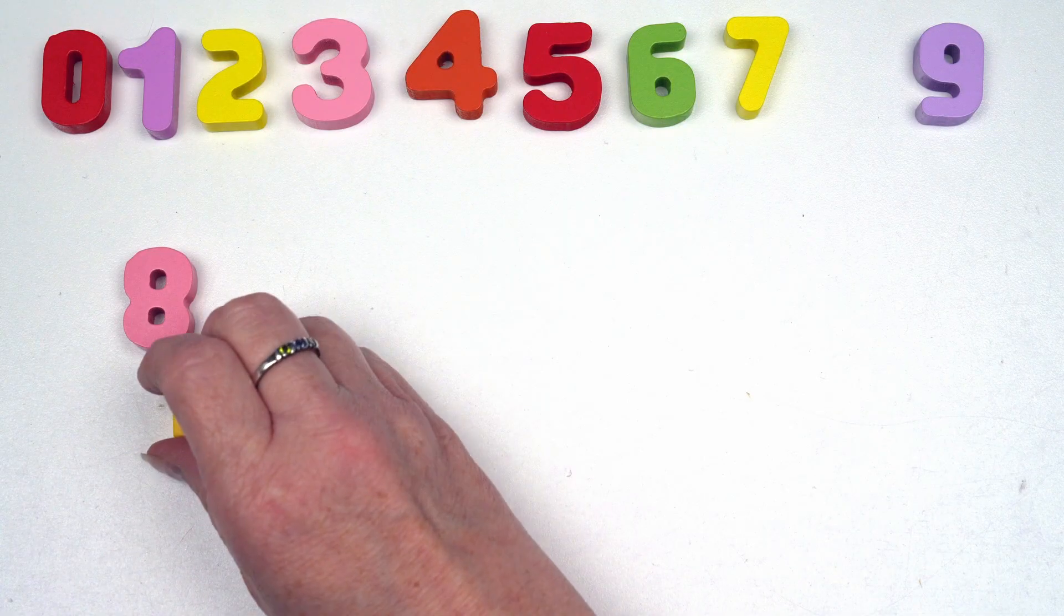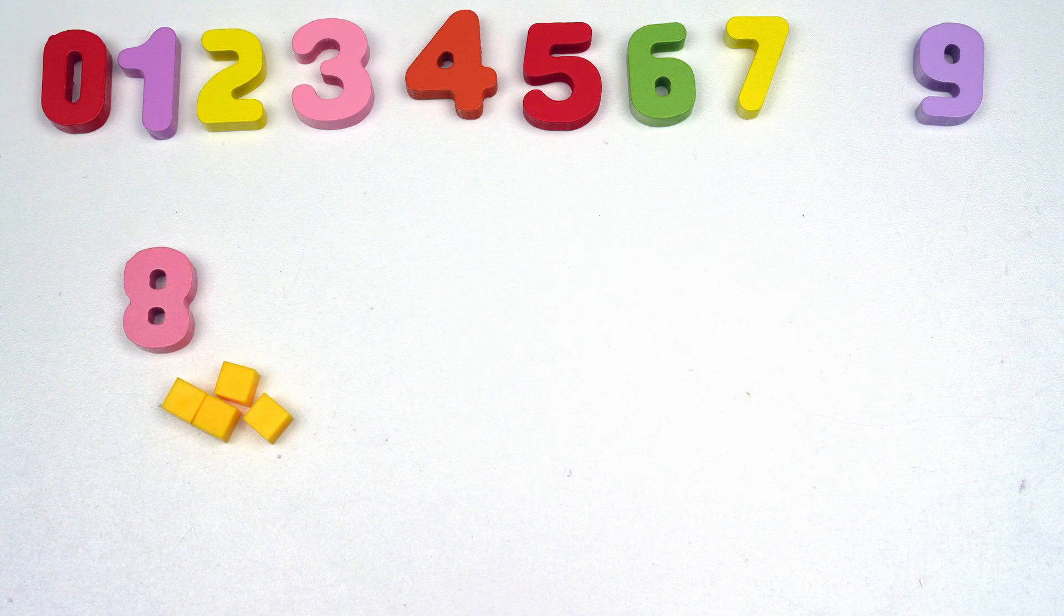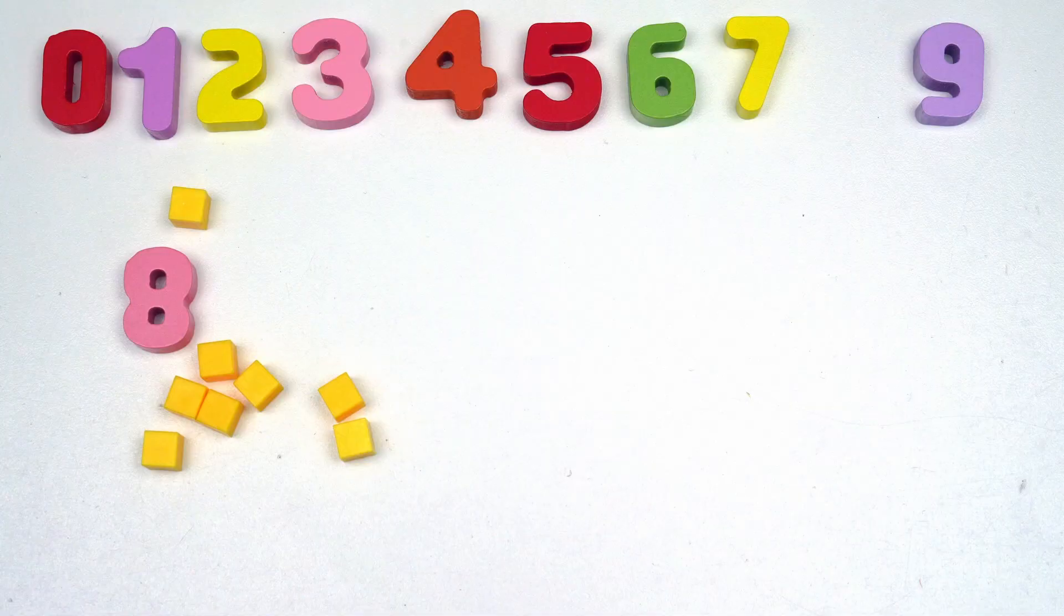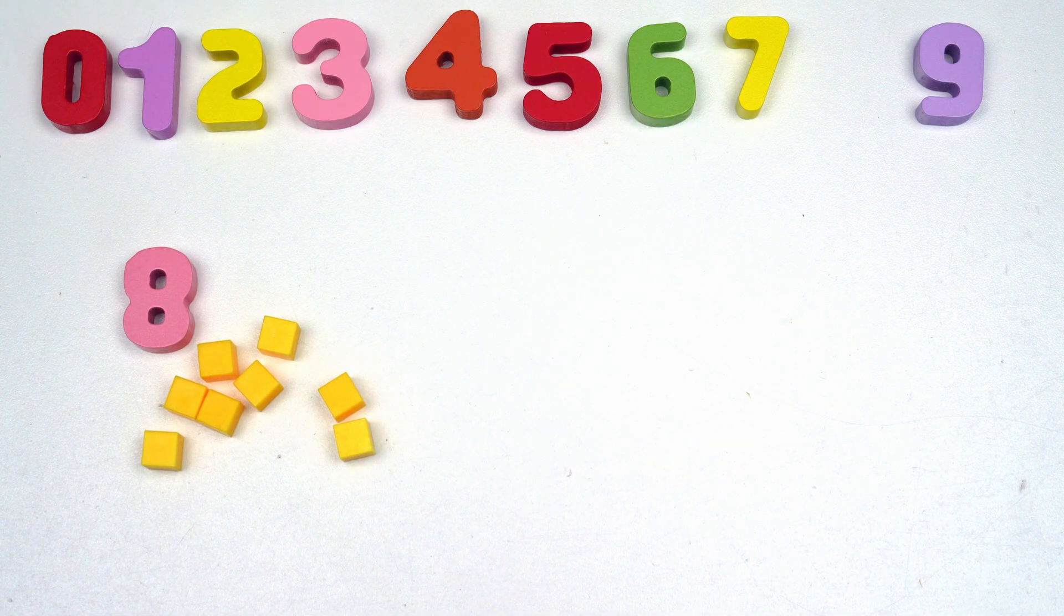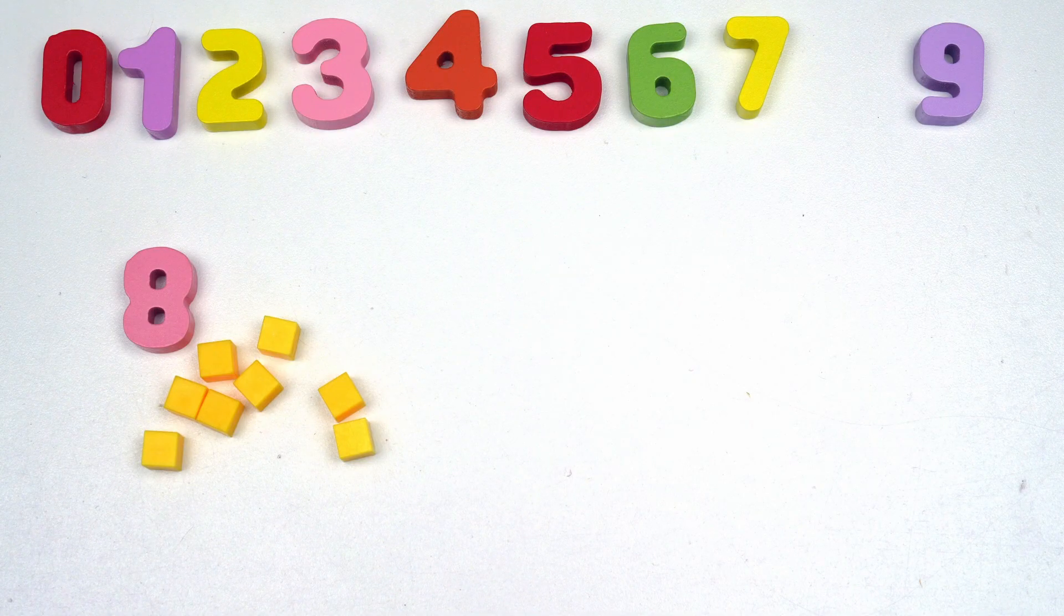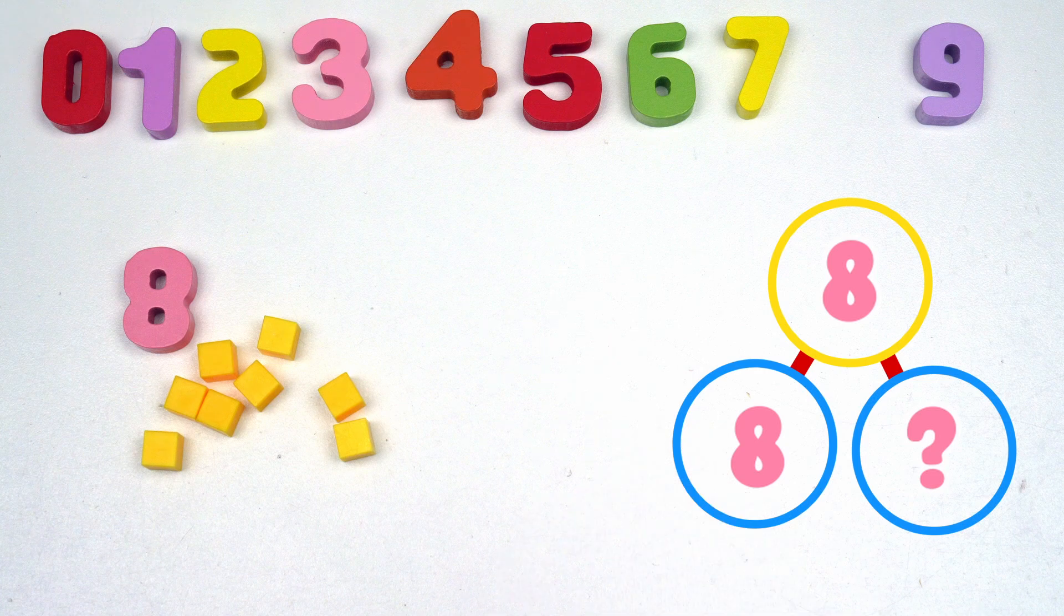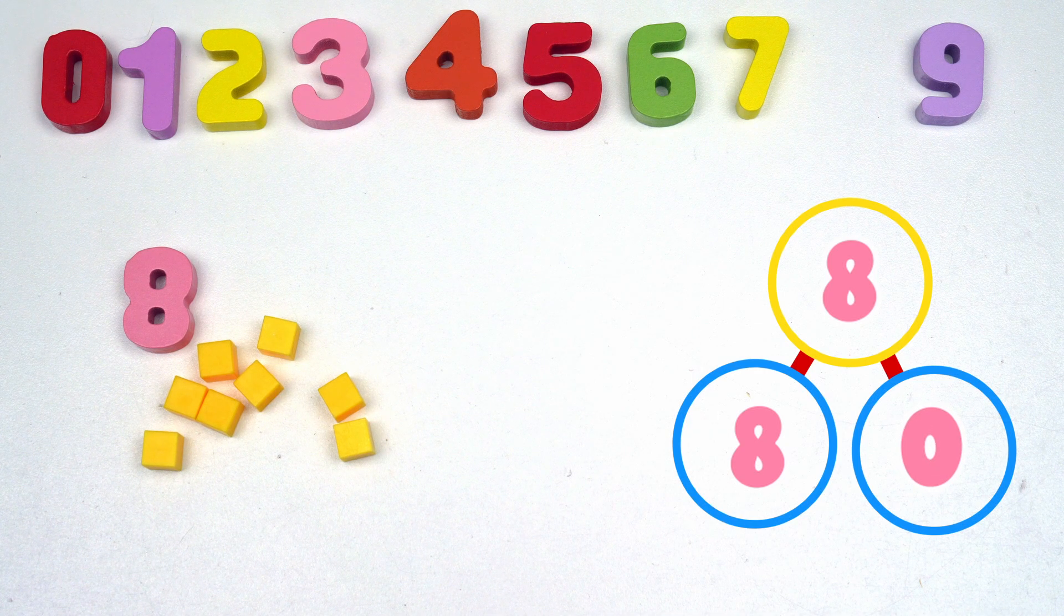One, two, three, four, five, six, seven, eight. Here we have eight blocks. So one number bond for eight would be eight and zero. Great job.